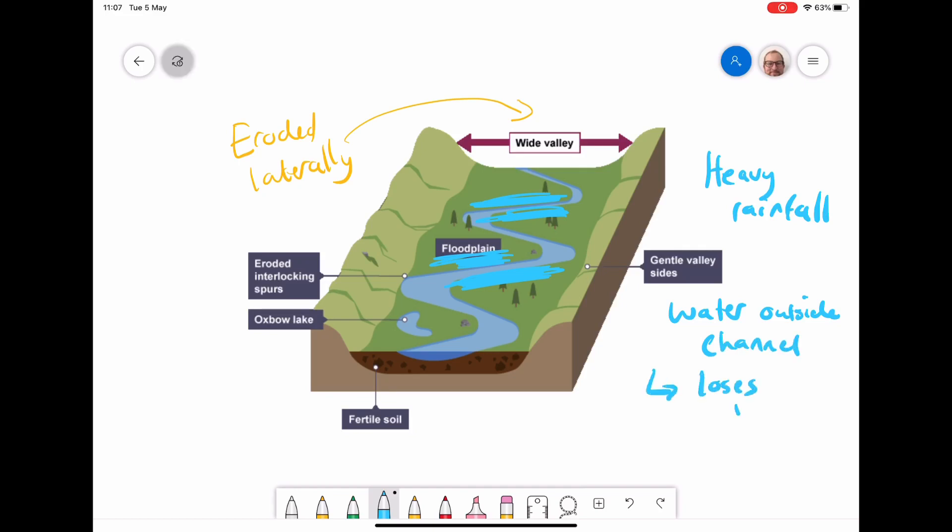When it loses velocity, that means it drops any of the sediment or load that is carried with it. So as the river floods over many times in this area on the floodplain, we get lots of rich sediment that was once in the main river being redistributed onto these areas on the floodplain.